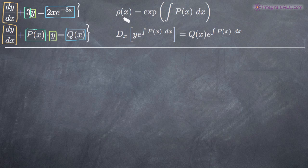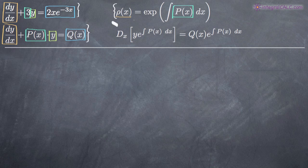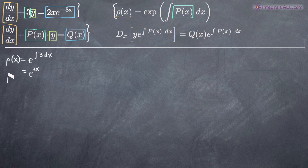The second step is to calculate the integrating factor, which is given by this formula here. This notation denotes the integrating factor. What we have to do is find the integral of p(x) and then raise e to that power. Since p(x) is 3, our integrating factor is e raised to the integral of 3 dx. The integral of 3 is 3x, which means our integrating factor is e to the 3x.